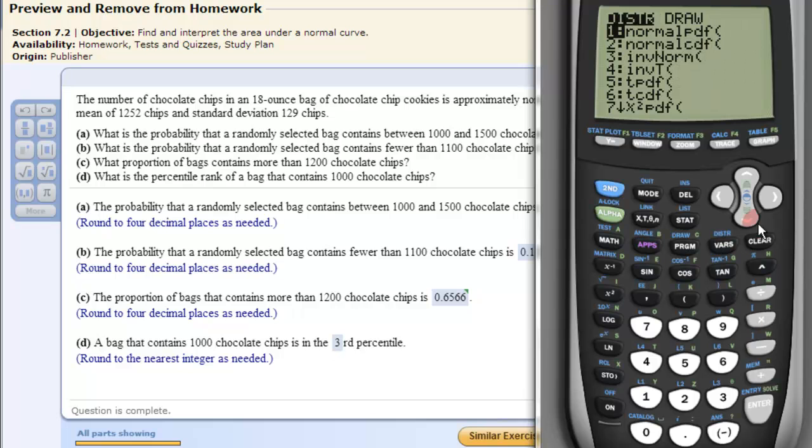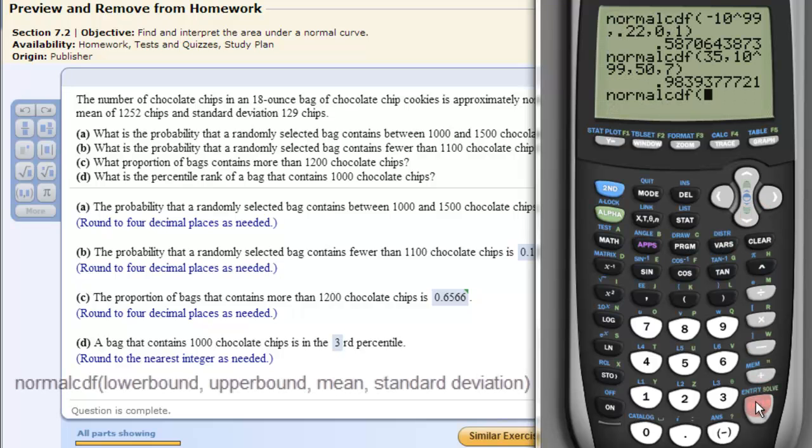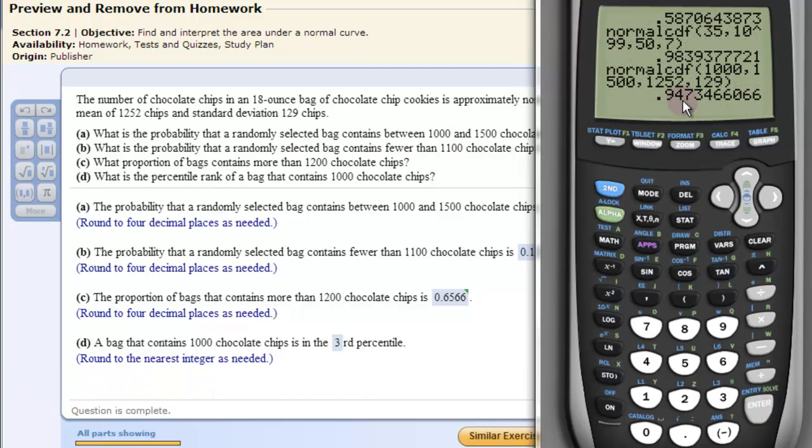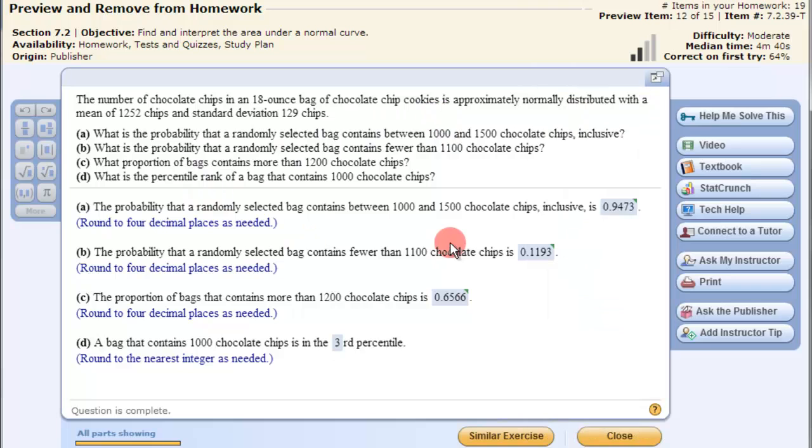Second, VARs, down to the normalCDF, between 1000. So left bound 1000, right bound 1500. Comma. The mean, 1252. Comma. The standard deviation, 129. And the parenthesis and hit enter - 0.9473. So that's the probability that it contains between those two values.